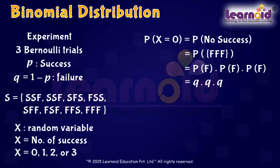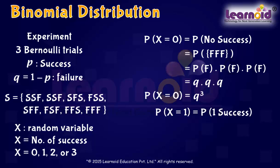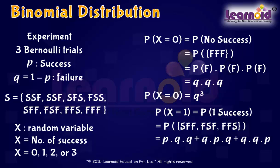Since Q is the probability of failure, P(X = 0) is equal to Q cubed. Now the probability of X equal to 1, i.e. one success, is the probability of getting exactly 1 success in all trials, which is equal to 3PQ squared.